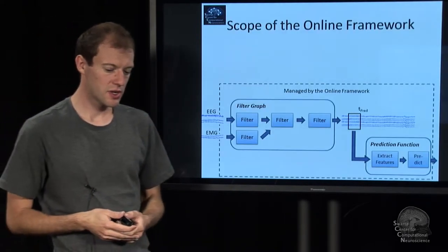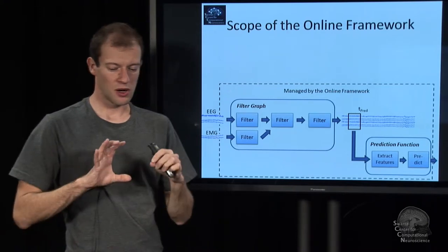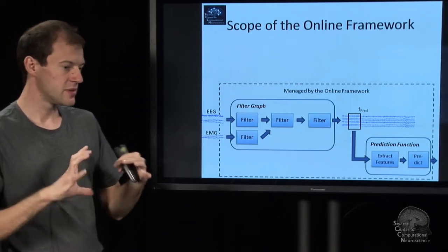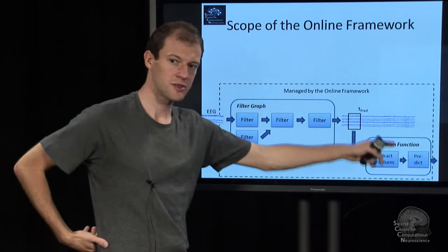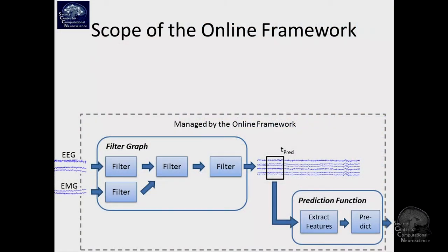So there are two major frameworks implemented in the toolbox. One is the online execution framework, which is basically exercising all the different modules for online processing. And what the online framework implements is this pathway that I've already explained in previous lectures. To summarize, you have multiple input data streams, raw data. You have a filter graph, one or multiple filter chains.